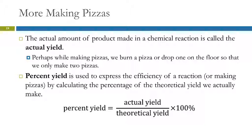In our pizza example, the sauce was the limiting reactant — we used up all the sauce. We had leftover cheese and leftover crust; those were excess. How much you actually make is called the actual yield. The actual yield is how much you actually make.